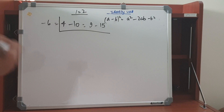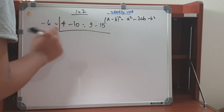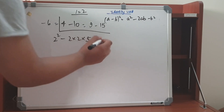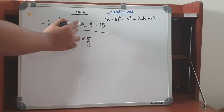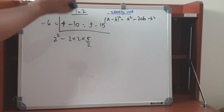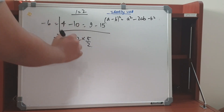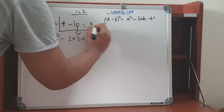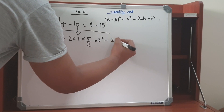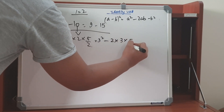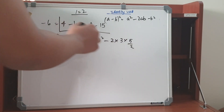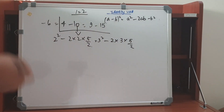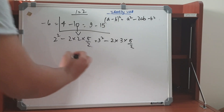We can write 4 minus 10 as 2 squared minus 2 times 2 times 5 over 2. We can simplify to get 5 times 2 which is minus 10. Similarly, 9 minus 15 can be written as 3 squared minus 2 times 3 times 5 over 2, and 5 times 3 is 15, so we get minus 15.